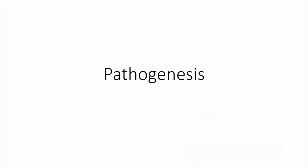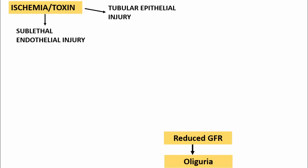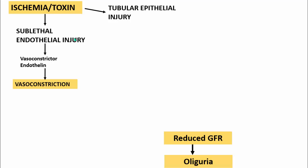The pathogenesis of acute tubular injury involves two important things: direct tubular injury or disturbances in blood flow. Whether it is ischemia or toxin, the ultimate feature is oliguria due to reduced GFR. Ischemia or toxin ultimately injures cells — either tubular epithelial cells or endothelial cells. Whenever there is sublethal endothelial injury, it results in release of the vasoconstrictor endothelin, causing vasoconstriction, automatically reducing GFR and resulting in decreased urinary output or oliguria.